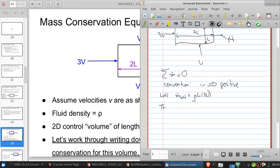What's the top? M dot top equals rho times 2L times V. The bottom: M dot bottom equals rho times 2L times V, again.